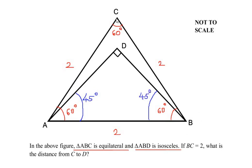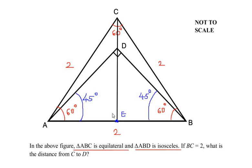Now the question asks us to find the distance between the points C and D. Let me drop down an altitude from point C which connects point D and drops down to the side AB, and let me name that point E. This altitude dropped from point C through D down to point E divides the entire triangle into two equal halves. So we have triangle AEC as a right angle triangle and triangle AED also at 90 degrees.